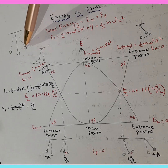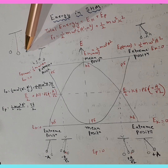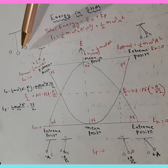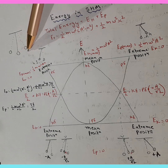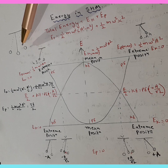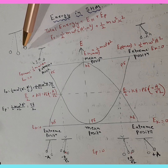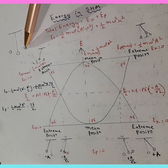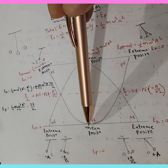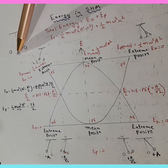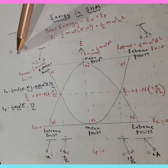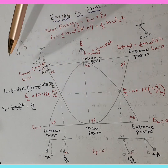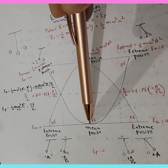The bob reaches up to its amplitude only. It gains height going from mean position to extreme position, so it gains potential energy. At the extreme, since it has gained height and kinetic energy is 0, all energy is potential energy. At the mean position, there is no height, so potential energy is 0.